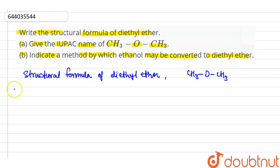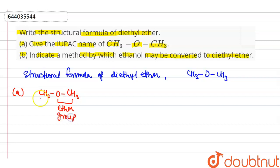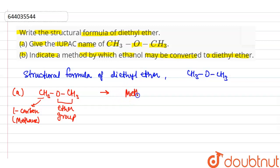Now for option A, we give the IUPAC name of CH3OCH3. Here, the ether group is present and only one carbon is on each side, so we write methane. The IUPAC name of this compound is methoxy methane.